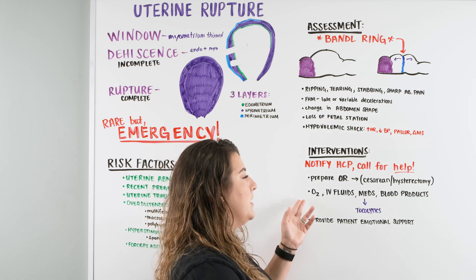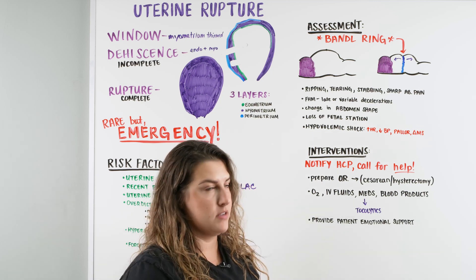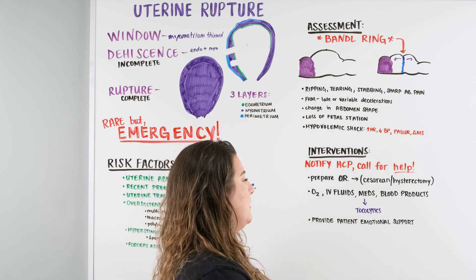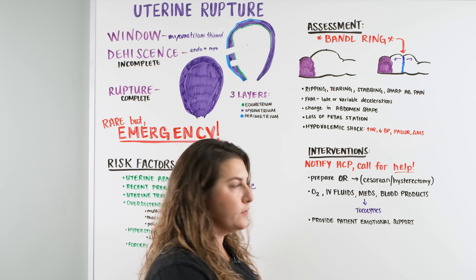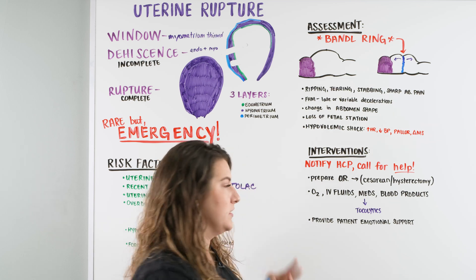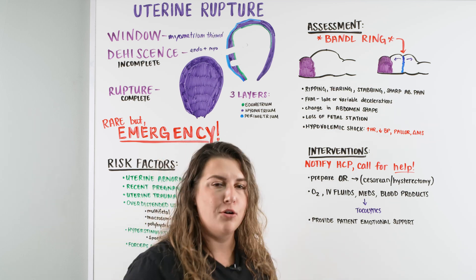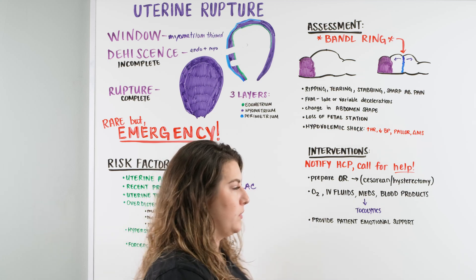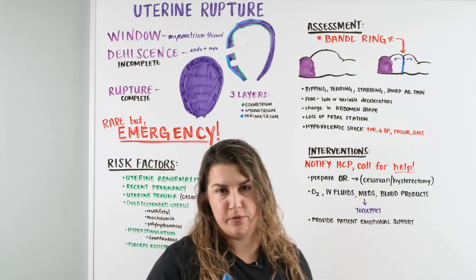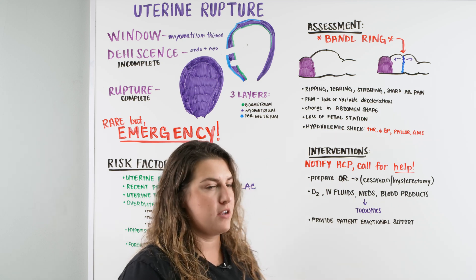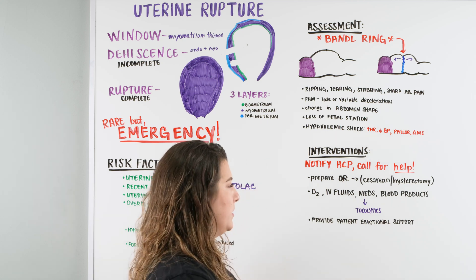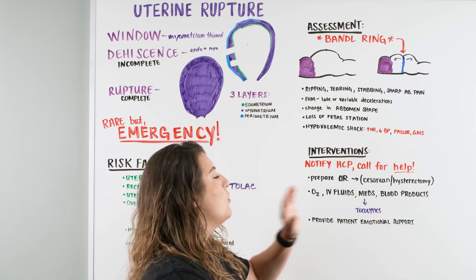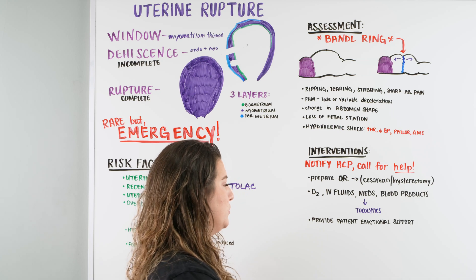Quickly give this patient oxygen because if they are becoming hypovolemic and hemorrhaging, they'll need that oxygen fast. They'll need IV fluids, they'll need medications — possibly tocolytics to slow down the contractions. You also want to consider blood products. This is why when a patient comes in possibly going into labor, we always check their blood type with a type and screen, so we know for this or any other emergency we can administer blood products quickly.